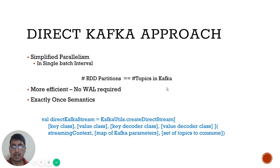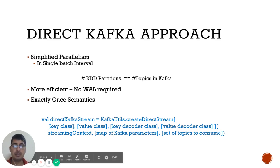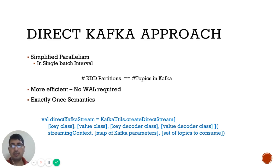To create a direct Kafka stream, Spark Streaming APIs provide the implementation — you just call KafkaUtils.createDirectStream() with the respective parameters, get the Kafka stream, and start processing normally. The creation and handling of the direct stream is abstracted from the user. This is a great way to integrate Spark with Kafka. If you have any comments, please post them in the comment section. Thank you.